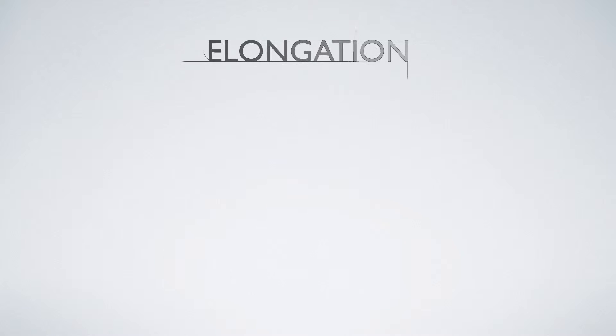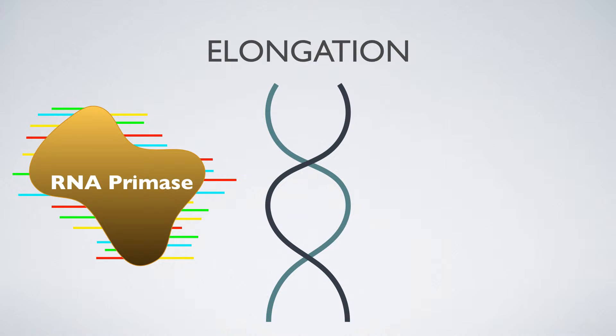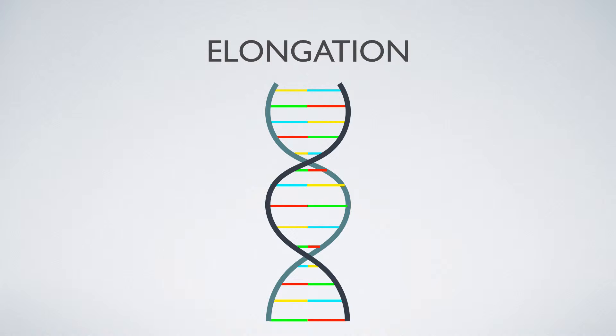Elongation begins with the RNA primers from initiation creating a new DNA strand base by base, using the parent strands as a guide. The elongation process is controlled by DNA polymerase.